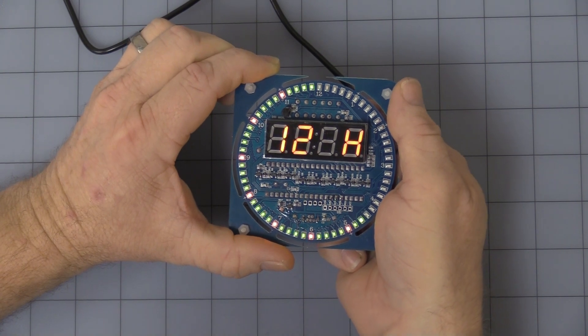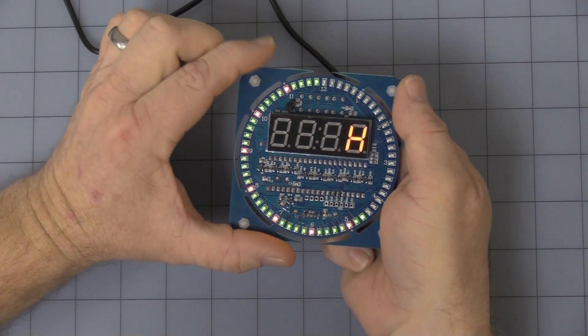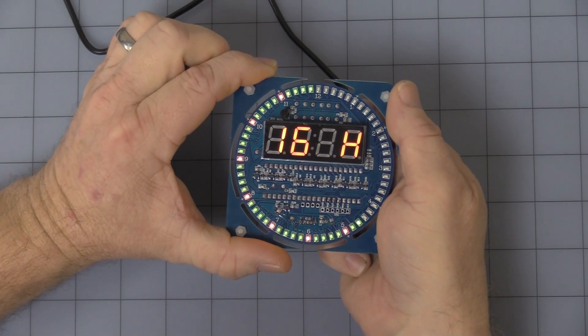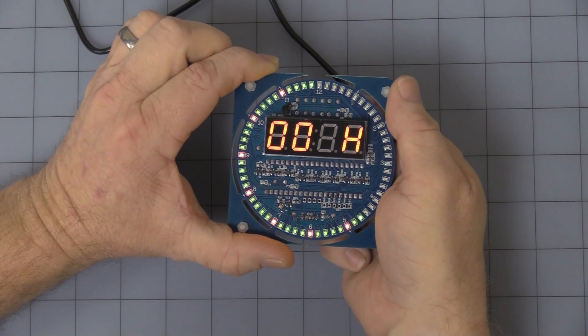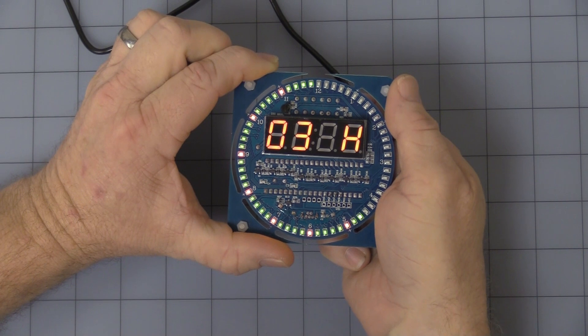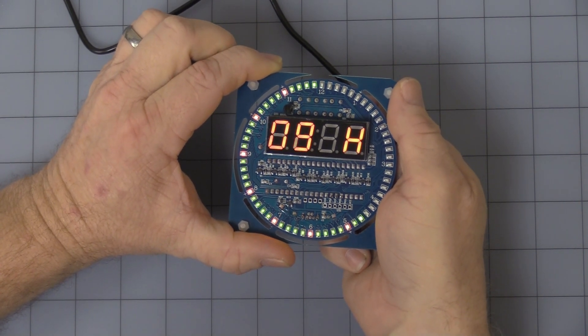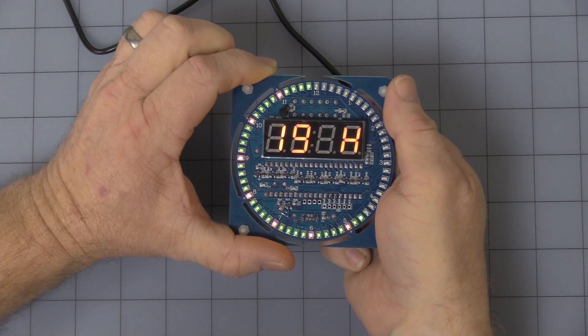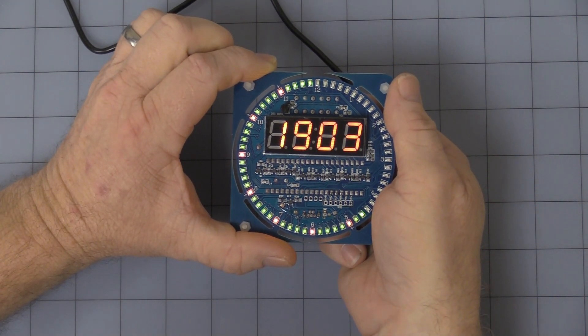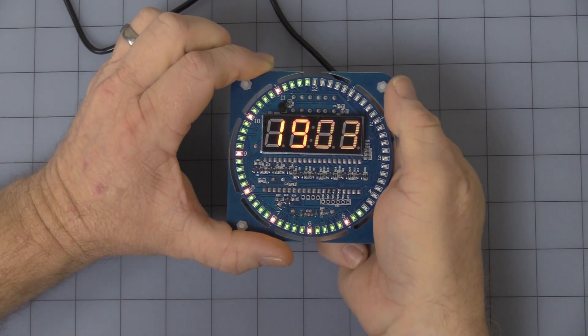As you can see it knows how many days are in that month for that year. Press the mode button again and it starts the hours. This is 24 hour military time only, goes up to 23 then back to zero. Press the mode button again and now we're into the minutes.